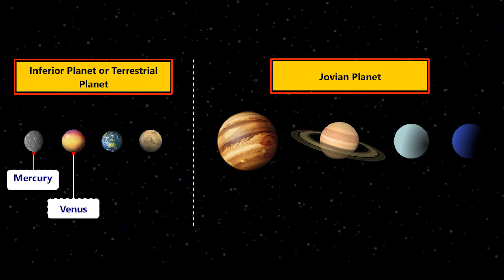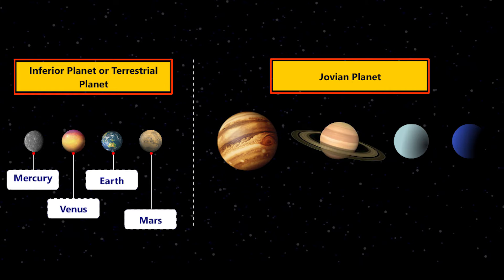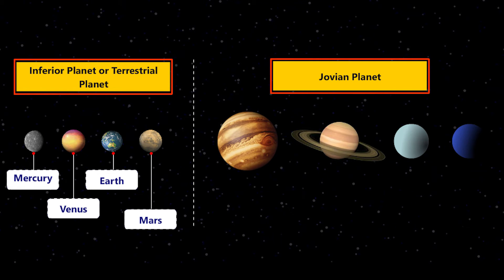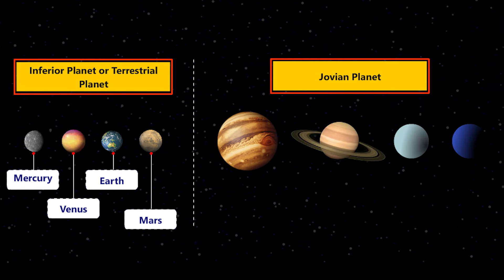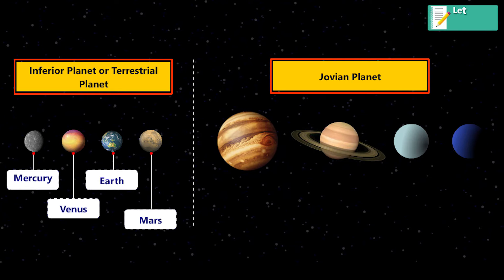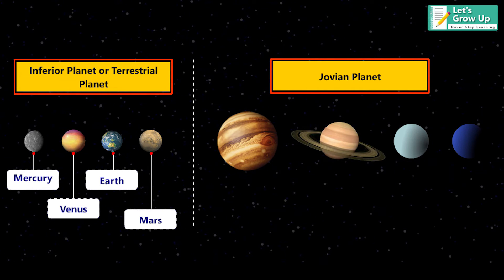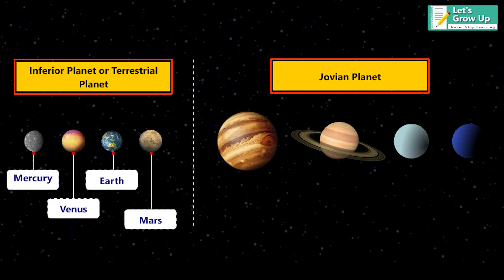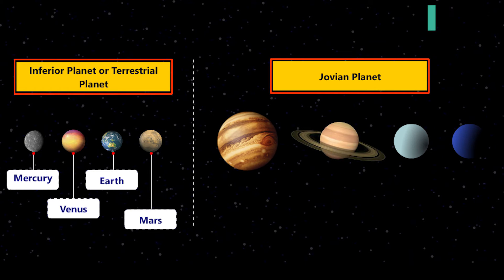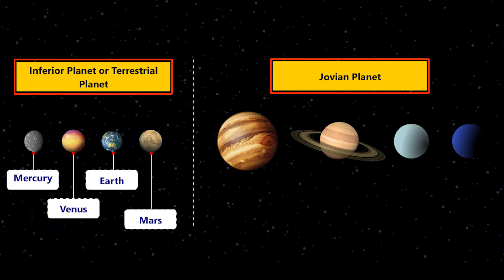Mercury, Venus, Earth and Mars are inferior or terrestrial planets. Terrestrial planets are made up of rocks or metals with hard surfaces, making them different from other planets that lack a solid surface. Terrestrial planets also have a molten heavy metal core, few moons, and topological features such as valleys, volcanoes and craters.